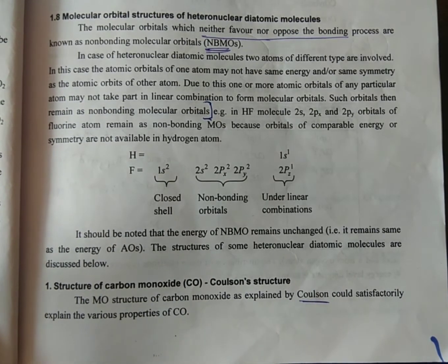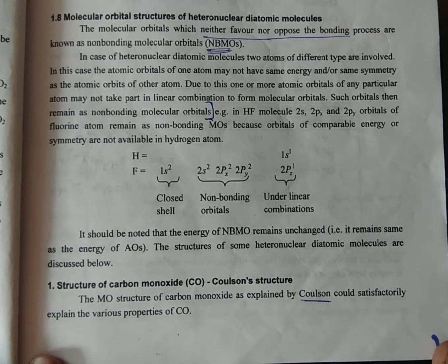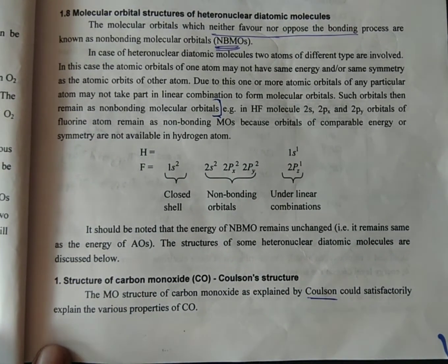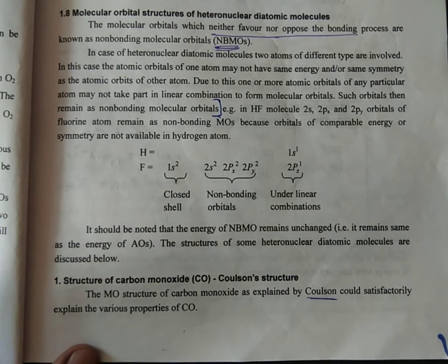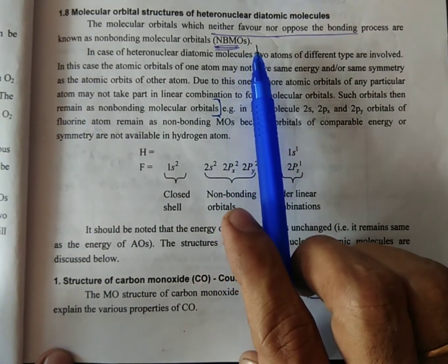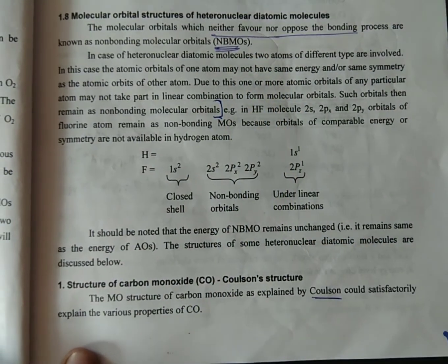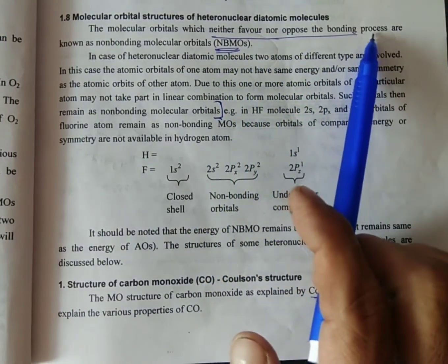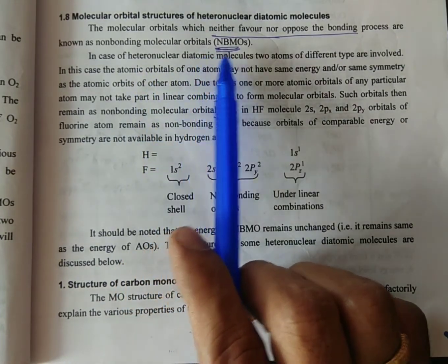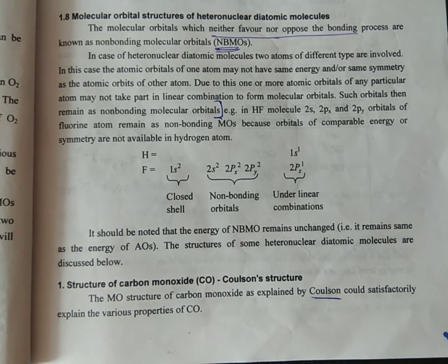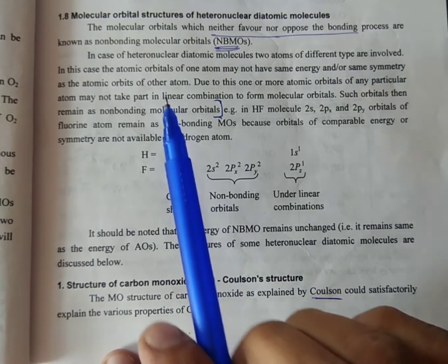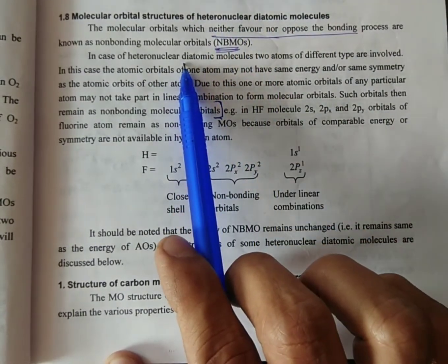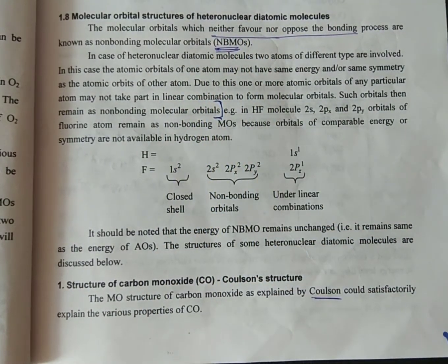Dear students, today we are going to discuss about the molecular orbital structures of heteronuclear diatomic molecules. The molecular orbitals which neither favor nor oppose the bonding process are known as non-bonding molecular orbitals. These are non-bonding molecular orbitals which are not involved in the bonding process. I am going to discuss about heteronuclear diatomic molecules which involve two atoms.